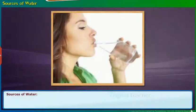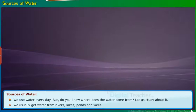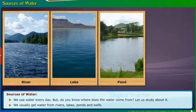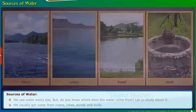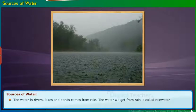Sources of water: We use water every day, but do you know where the water comes from? Let us study about it. We usually get water from rivers, lakes, ponds, and wells. The water in rivers, lakes, and ponds comes from rain. The water we get from rain is called rainwater.